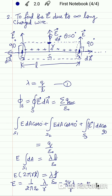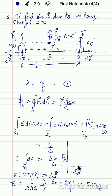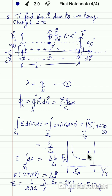The result can also be written as E equals 2k·lambda by r. From this, the electric field intensity is inversely proportional to r. If we plot a graph with E on the y-axis and r on the x-axis, this will be a rectangular hyperbola, showing that as r increases, E decreases. If instead we plot 1/r versus E, that graph will be a straight line passing through the origin.